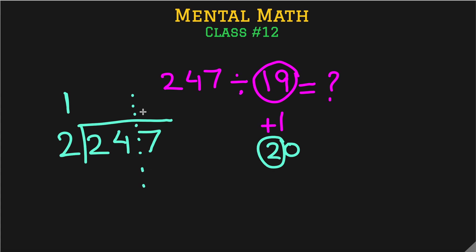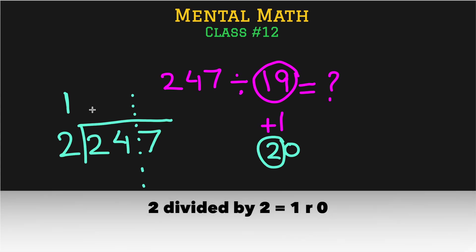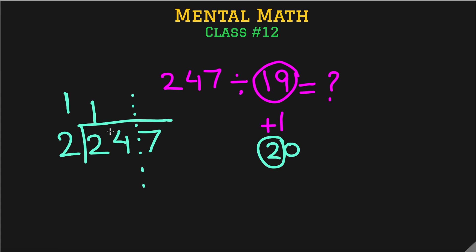The remainder area will be handled differently from the rest. Our new divisor is 2 and the multiplier is 1. Starting the division: 2 divided by 2 is 1, a clean division with remainder 0. That remainder comes into the remainder area but has no impact since it's 0.